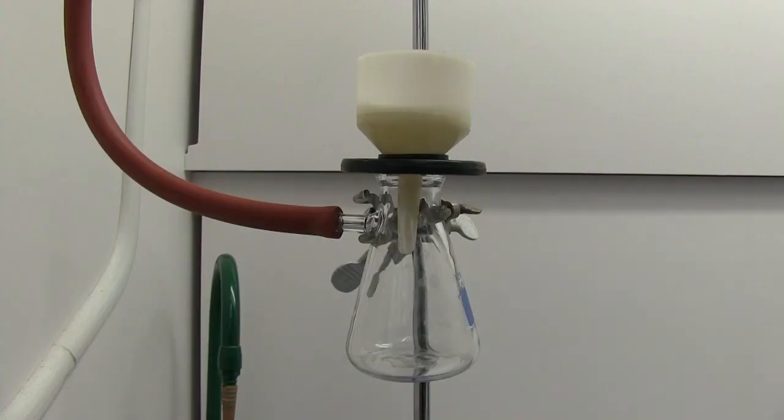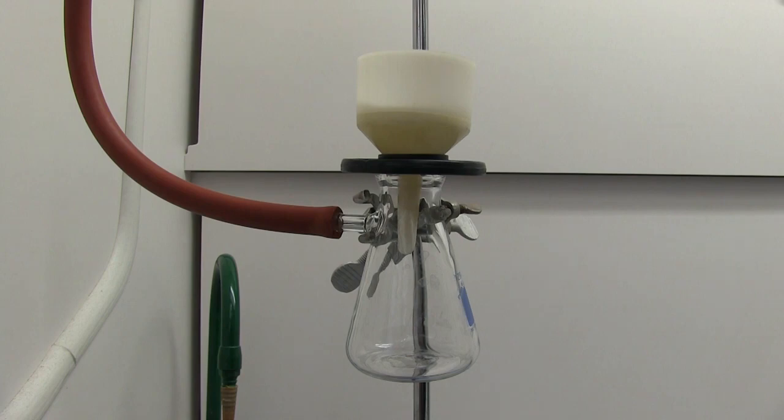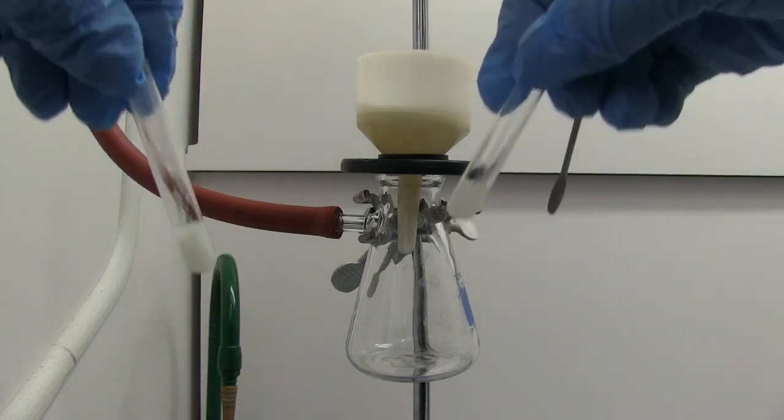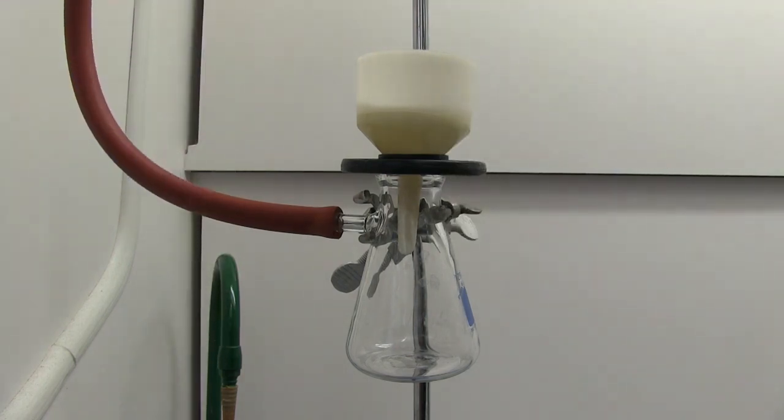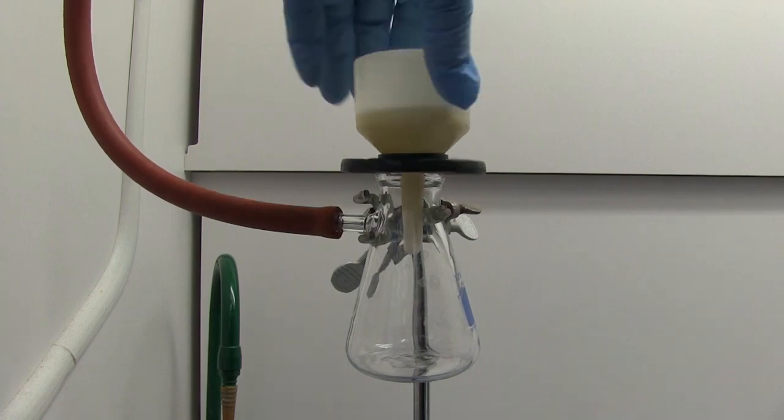Alright, so I'm now going to vacuum filter or I'm now going to filter off and collect our caffeine. Both of my recrystallization test tubes look similar so I'm going to combine the product and then, it's not part of the experiment but I'm going to test with IR just to confirm that it is caffeine.